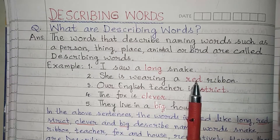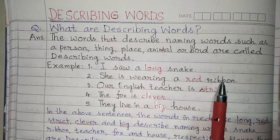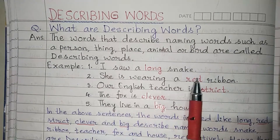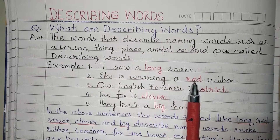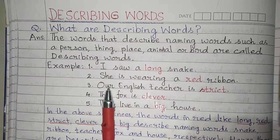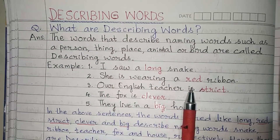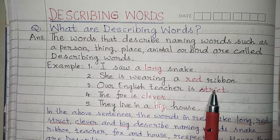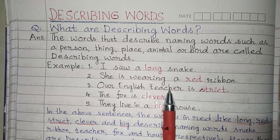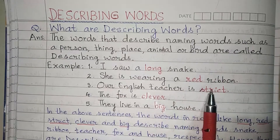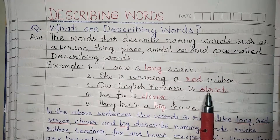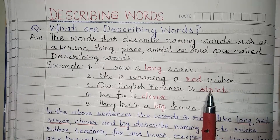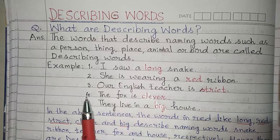How is the ribbon? Red. So therefore 'red' is also a describing word. Example three: Our English teacher is strict. The word 'strict' describes the English teacher — how is the English teacher? Strict. So 'strict' is a describing word because it is describing the teacher.